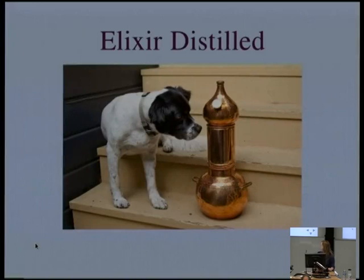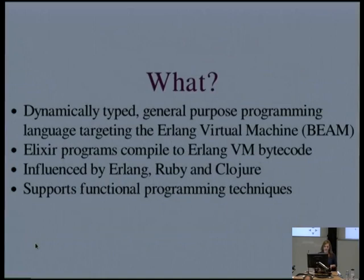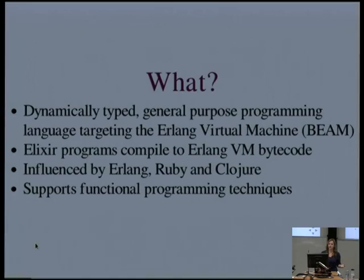To start off, I'm going to give a bit of an overview of the language itself. As a former journalist, I'm going to do that with the good old five W's and the H. So, what is Elixir? Elixir is a general-purpose, dynamically-typed language that targets the battle-tested Erlang virtual machine, also known as Beam. Elixir programs compile down to Erlang bytecode, so there's no performance hit from calling Erlang from Elixir or vice versa.